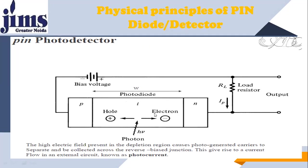No free electron-hole pairs are found in the intrinsic region. This is the depletion region, which is very wide. W is the width of the depletion region. The biasing is again reverse biasing. When a photon of energy hμ falls on the intrinsic layer, in this particular example we assume one photon.